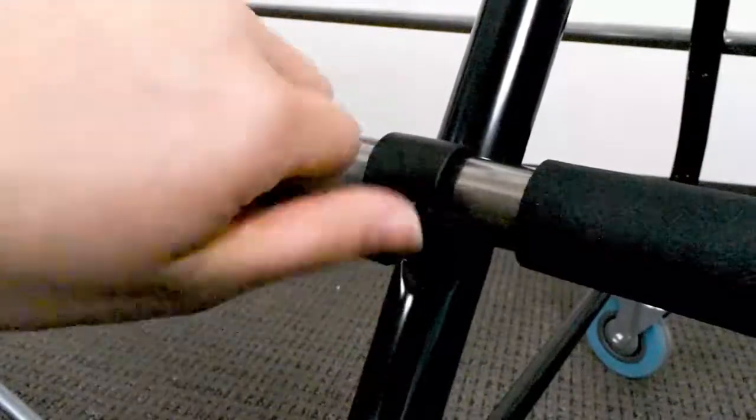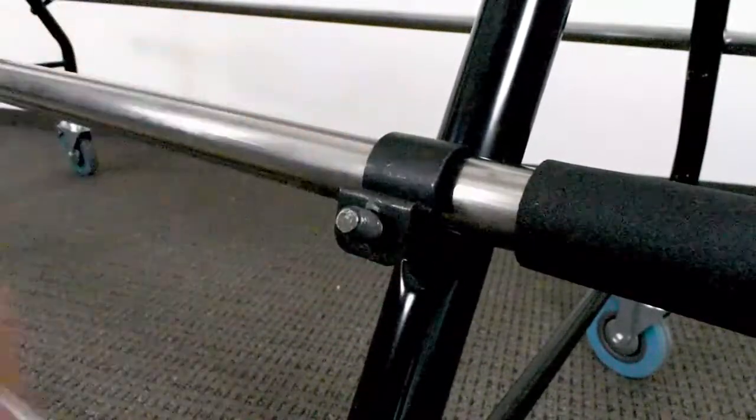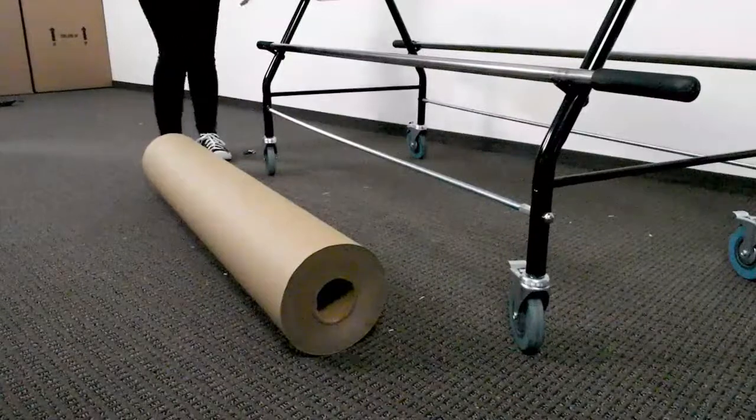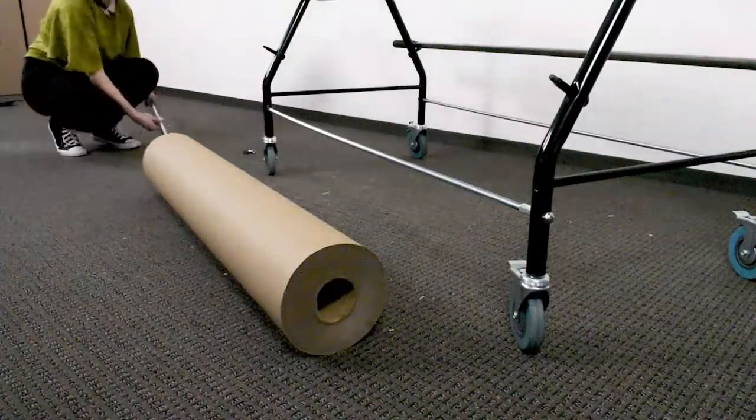To load the stand, simply unscrew the wing nut on both sides of the pole and remove the roll clip. Then take the pole and slide it through the core of your material.